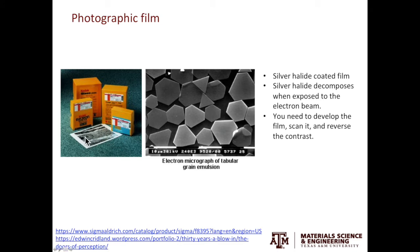The second way to record images is to use photographic film, and this is the end product you get — a physical photograph. The photographic films are coated with silver halide. When exposed to the electron beam, the silver halide will decompose. More electrons hitting a certain region means more silver in that region, and darker it will appear on the photograph. After acquiring the images, you need to remove those photo plates from the TEM, develop the film, scan everything, and reverse the contrast.